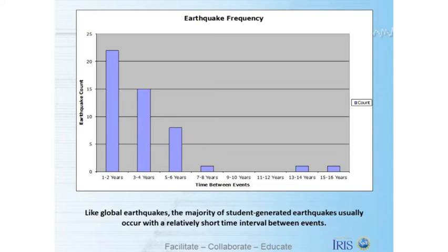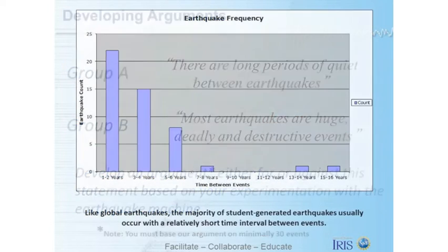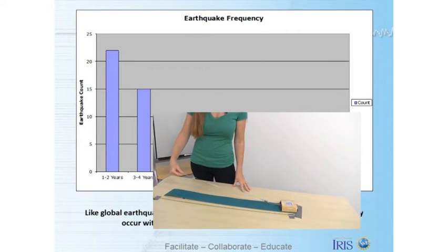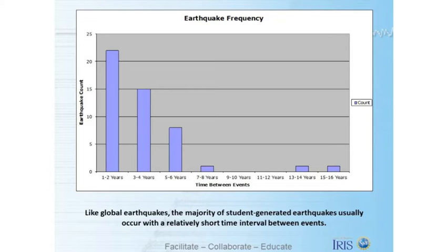Now that you've plotted those up, let's think about the statements we asked the students earlier. Group A: 'there are long periods of quiet between earthquakes.' Group B: 'most earthquakes are huge, deadly, and destructive events.' They were supposed to develop arguments for or against these statements based on their experiments with the earthquake machine. Group A was looking at time — that's when we were pulling the block and strain was accumulating in the rubber band. Looking at the time between events, or earthquake frequency, we can see that the majority of events occurred within a relatively short time interval, and that's what we see with global earthquakes as well.